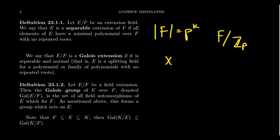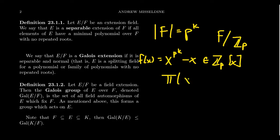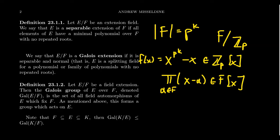A finite field F is the splitting field for the polynomial x^(p^k) - x, viewed as a ℤ_p polynomial — call it f(x). By previous work, every element of F is a root of this polynomial. Viewed as a polynomial with F coefficients, it factors as the product of (x - α) over all α in F, so it splits completely. This factorization accounts for exactly p^k distinct roots — there are no repeated roots.